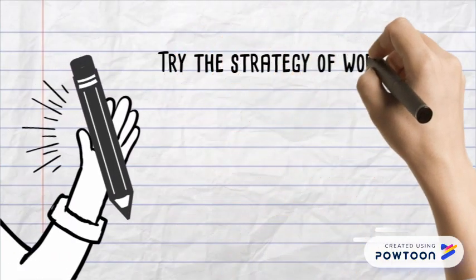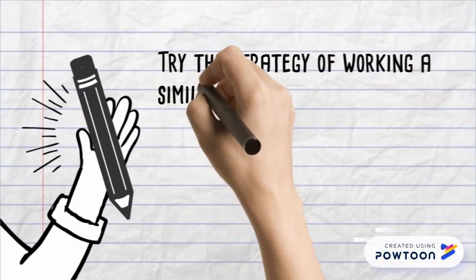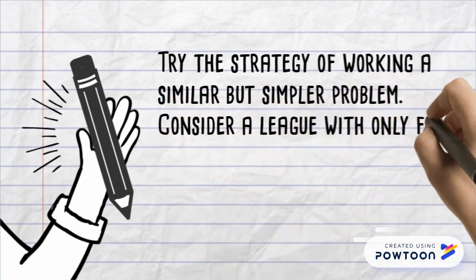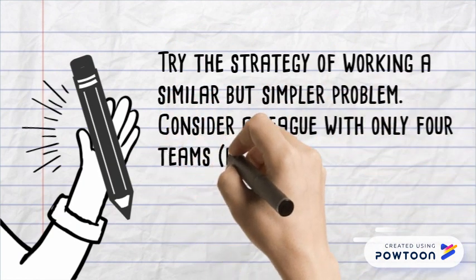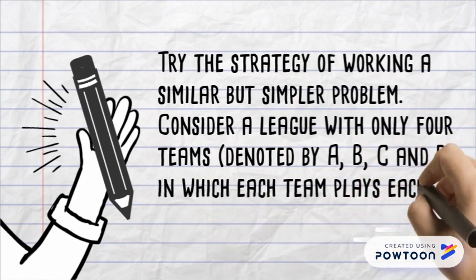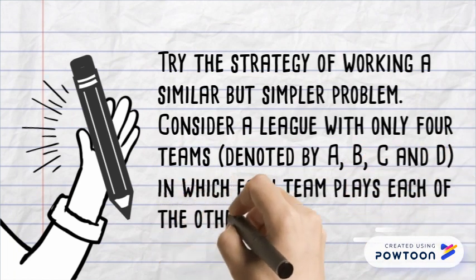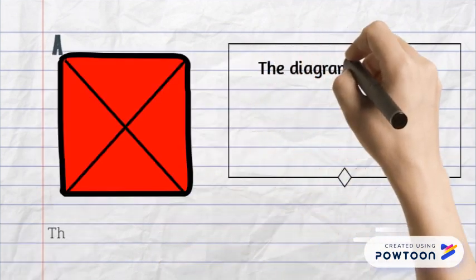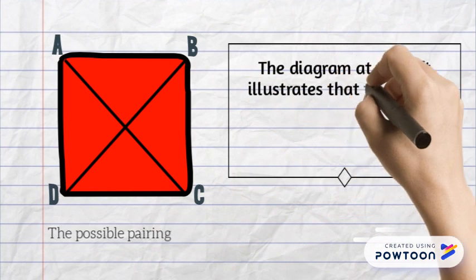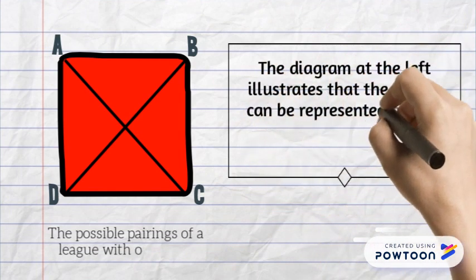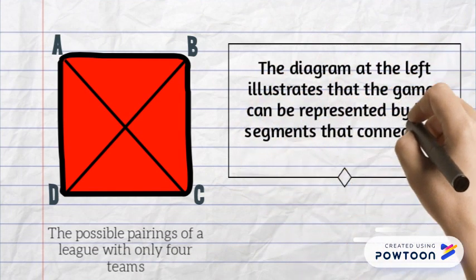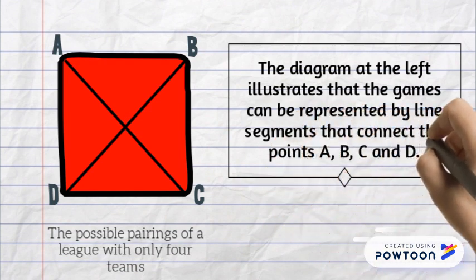Try the strategy of working a similar but simpler problem. Consider a league with only four teams, denoted by A, B, C, and D, in which each team plays each of the other teams only once. The diagram illustrates that the games can be represented by line segments that connect the points A, B, C, and D.